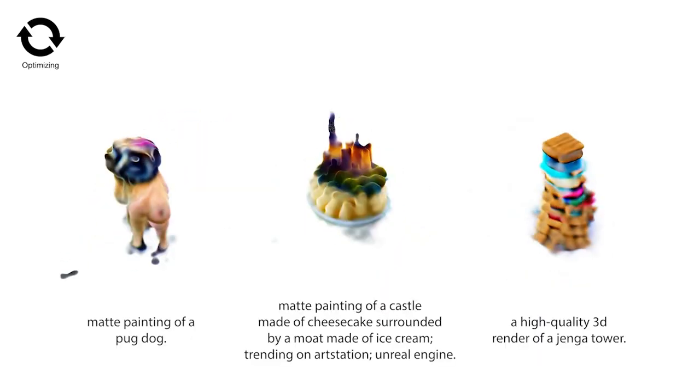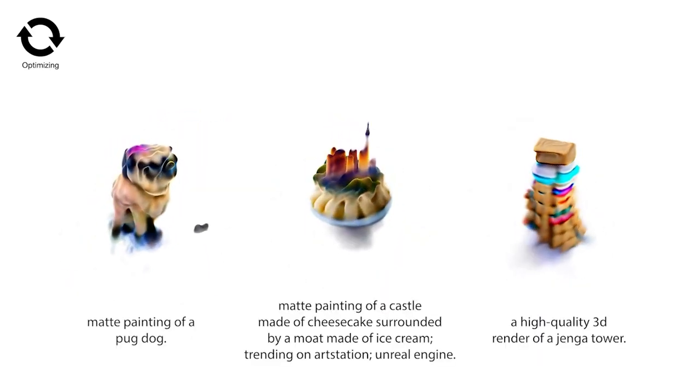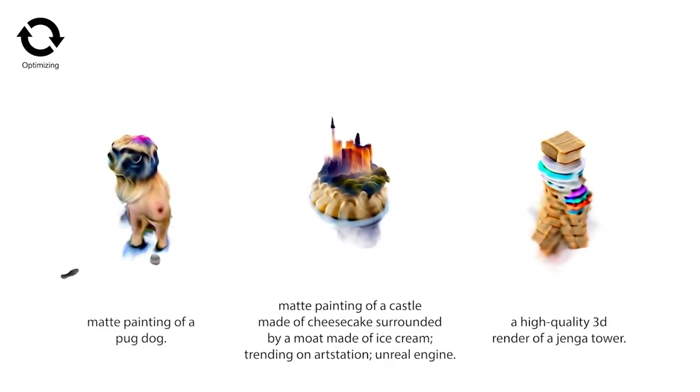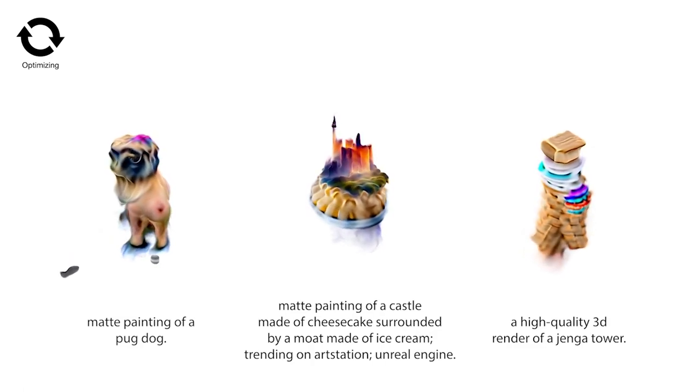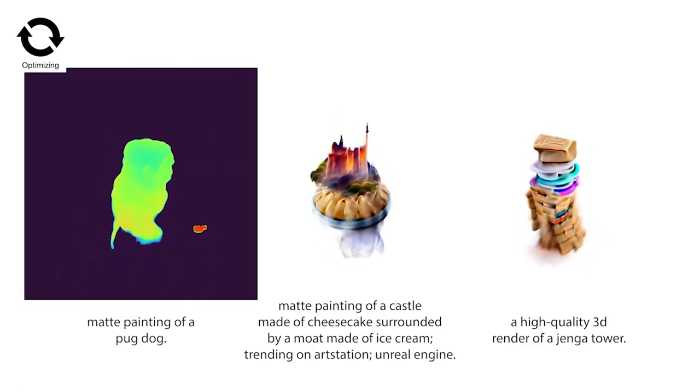We don't constrain generation to a specific category of objects. Instead, our image text representations are trained on a very large diversity of web data and support generation across many types of categories.